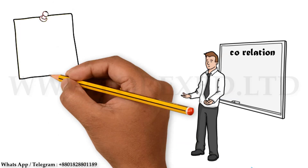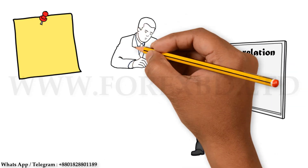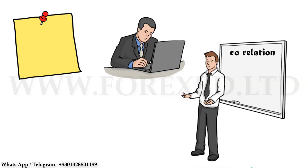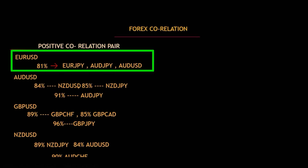I am presenting both positive and negative correlation, highlighting the positive correlation so you can understand. Keep notes of what you learn so you don't have difficulty in the future, and practice them again and again. Now for the positive correlation pairs — I have listed the four major pairs that have the highest correlation percentage. The first is euro/USD, which has 81% positive correlation with euro/JPY, AUD/JPY, and AUD/USD.